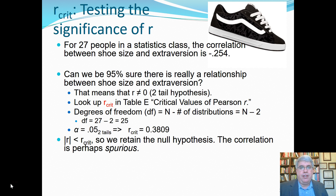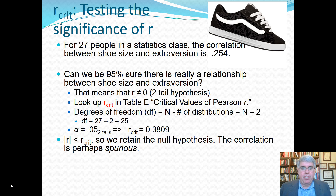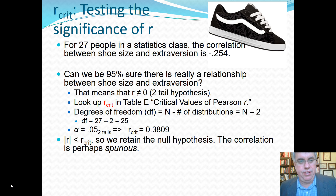In this section we're going to be looking at how to test the significance of a correlation R. We're specifically going to look at testing it with a table of critical values. We'll see later that there are other ways of testing its significance, and you can choose the way that you think is the easiest.